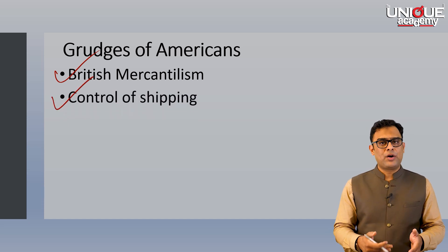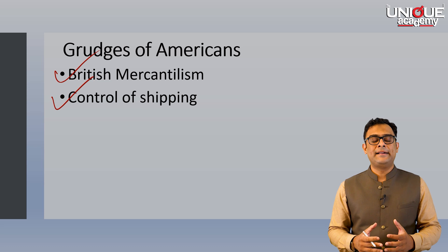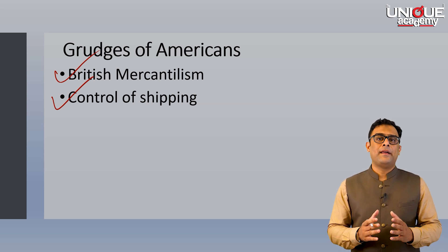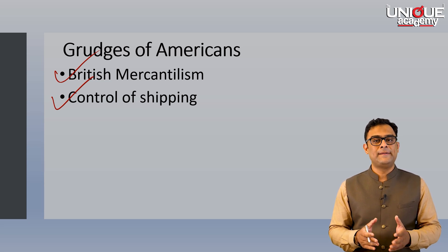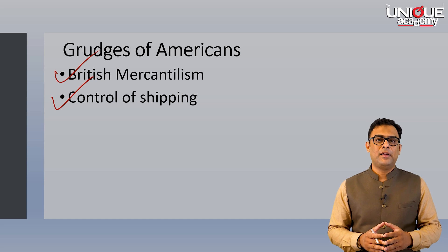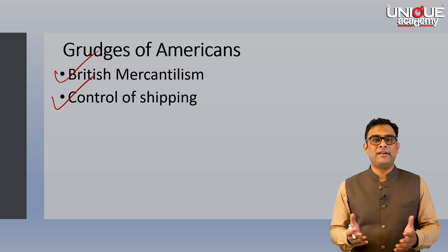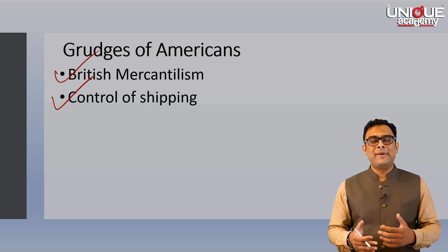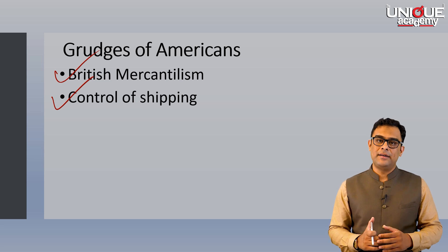The second issue is a corollary of British mercantilism — control over shipping. Britain enforced control over shipping for trade between American colonies and other parts of the world. It was compulsory on the colonies to use British shipping for whatever trade-related activities they did. This naturally compromised the interests of American colonies and hampered their trade.